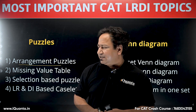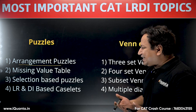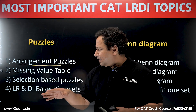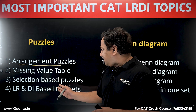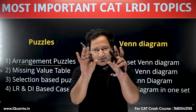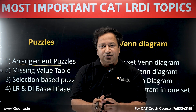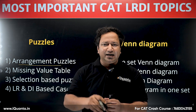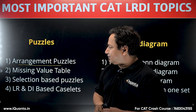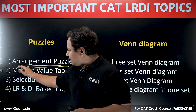Selection-based puzzles involve using certain clues to select specific elements. LRDI-based caselets are essentially literature — one or two paragraphs of information are given, and based on that you make a table and solve the entire case. In all these types except the missing value table, forming proper tables is very important.